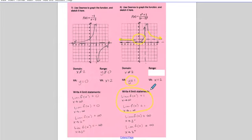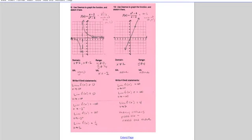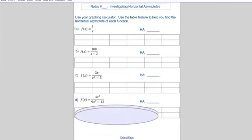I didn't pay close enough attention to my graph when finding the range, so I'm going to redo that. If you zoom in on Desmos, you'd notice that the y values go down to about one-fifth and not lower. So I'm going to say that y is greater than one-fifth for my range. We also had an application problem about people eating dinner at a party where you had to figure out the cost per person. And that brings us to today's lesson.